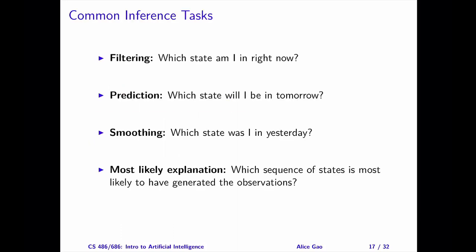There are four common inference tasks for a hidden Markov model: filtering, prediction, smoothing, and the most likely explanation.